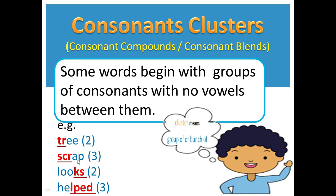In the word 'scrap' there are three consonant clusters — S, C, and R — and they come at the start of the word, so they are called initial consonant clusters. For final consonant clusters, the consonants come at the end of the word, like 'looks'. In 'helped', the '-ed' gives the sound of T, so we consider it one sound — giving three consonant clusters: H, L, P, T.